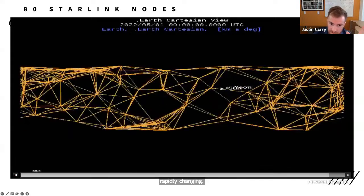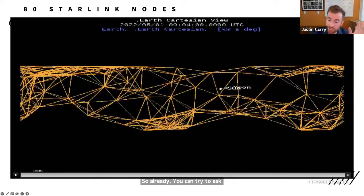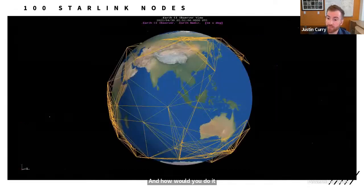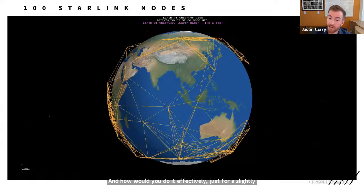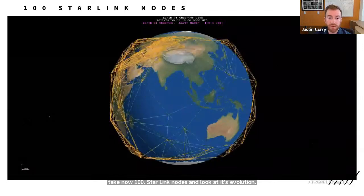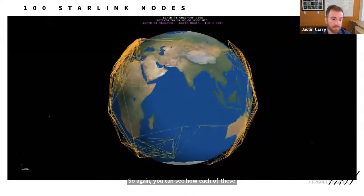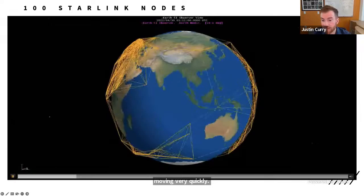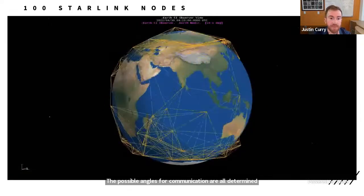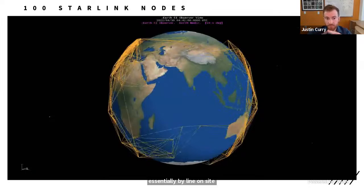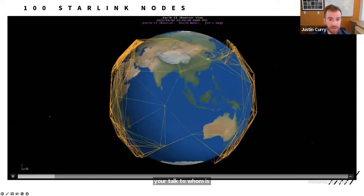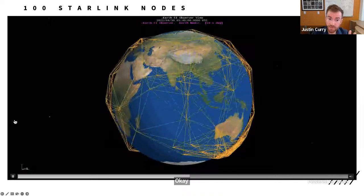So already you can try to ask yourself, what would it be like to try to route between two nodes on a system like this? And how would you do it effectively? Just for a slightly different view, let's take now a hundred Starlink nodes and look at its evolution in this sort of 3d spherical geometry. So again, you can see how each of these satellites are moving very quickly. The possible angles for communication are all determined essentially by line of sight. But even then the topology of who is able to see or talk to whom is rapidly changing.